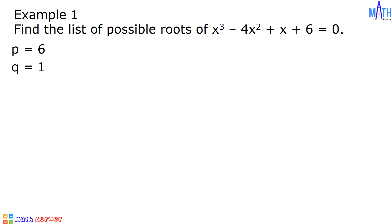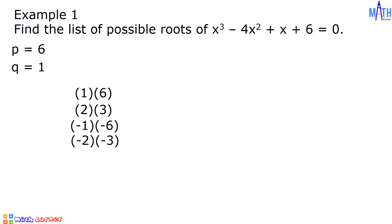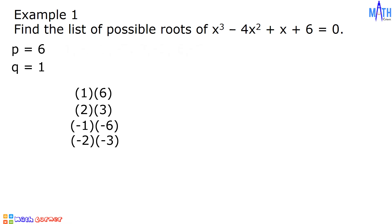Next step, let us find factors of 6 and 1. Since 6 equals 1 times 6, 2 times 3, negative 1 times negative 6, and negative 2 times negative 3, the factors of 6 are positive and negative 1, positive and negative 2, positive and negative 3, and positive and negative 6.